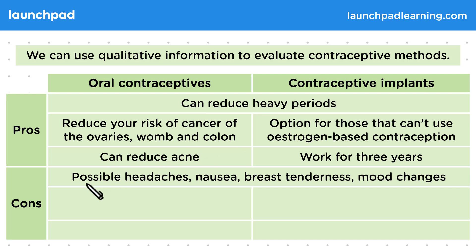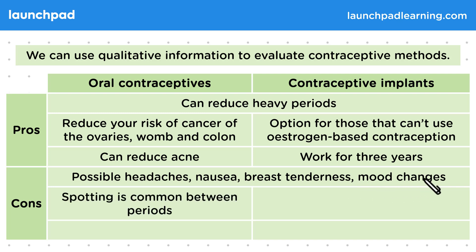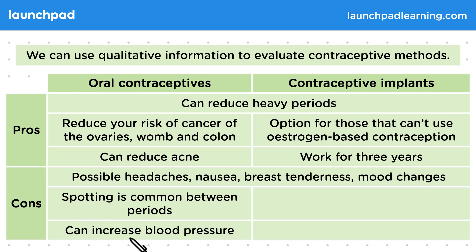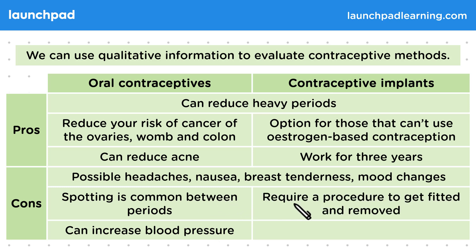Now let's look at the cons. A shared drawback of both methods is possible headaches, nausea, breast tenderness, and mood changes. A con of oral contraceptives is that spotting is common between periods — this means experiencing bleeding when you shouldn't be. Oral contraceptives can also increase blood pressure.